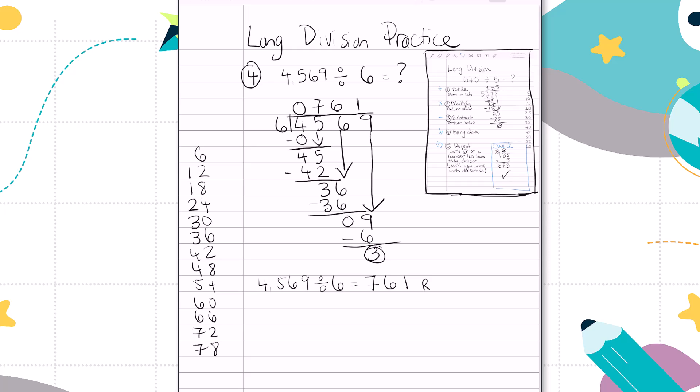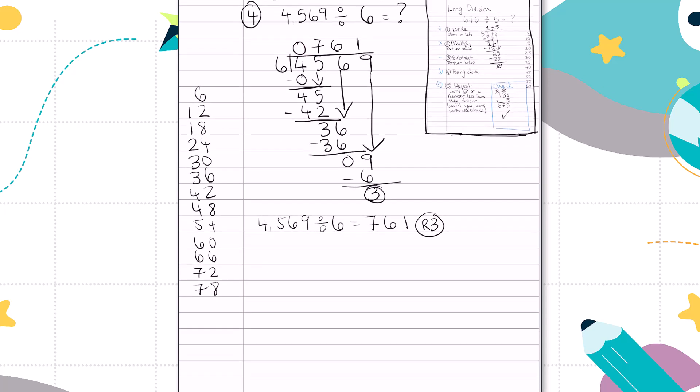761 remainder 3. But I have to complete a check step just to make sure I'm accurate. So let's undo our division with multiplication. I'll take my quotient, 761. 761 and multiply it by the divisor, which is 6. 6 times 1 is 6. 6 times 6 is 36. 6 times 7 is 42. Plus 3 more gives us 45. Oops, I think the battery ran out on my pen. Hold on a second. There we go. 45.